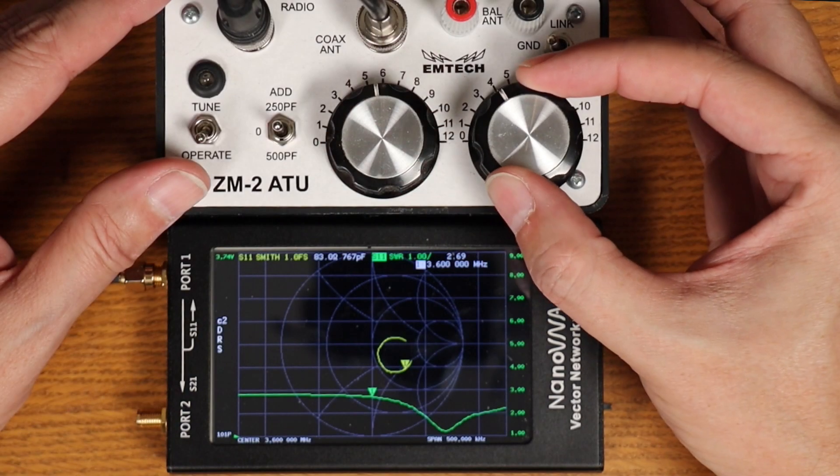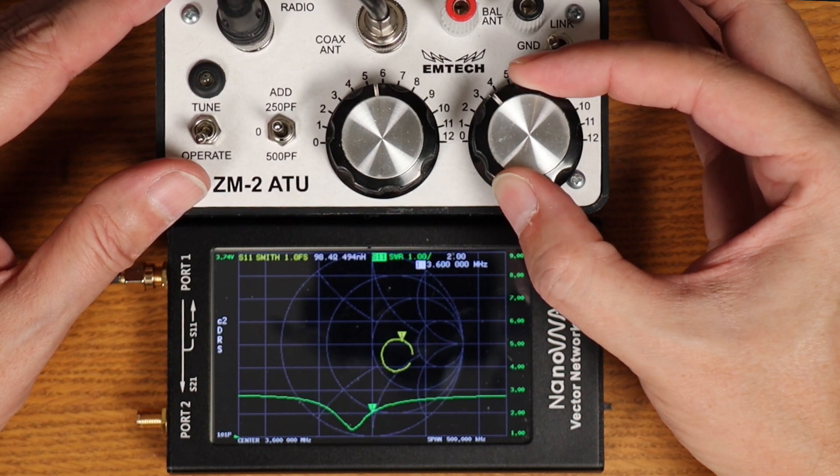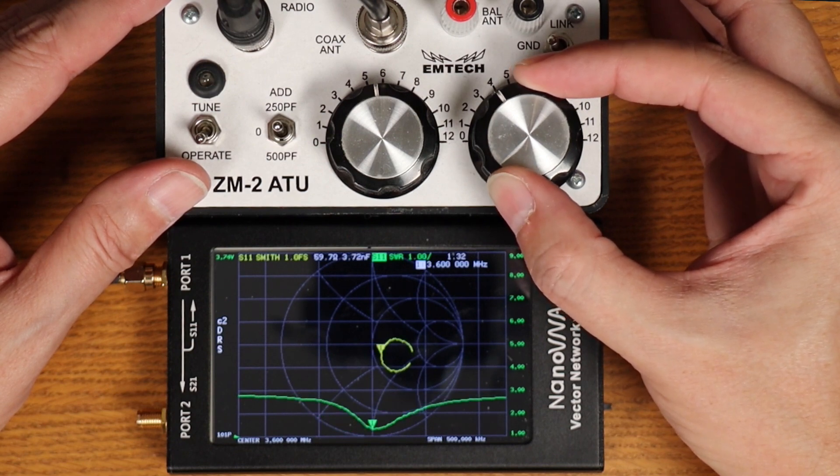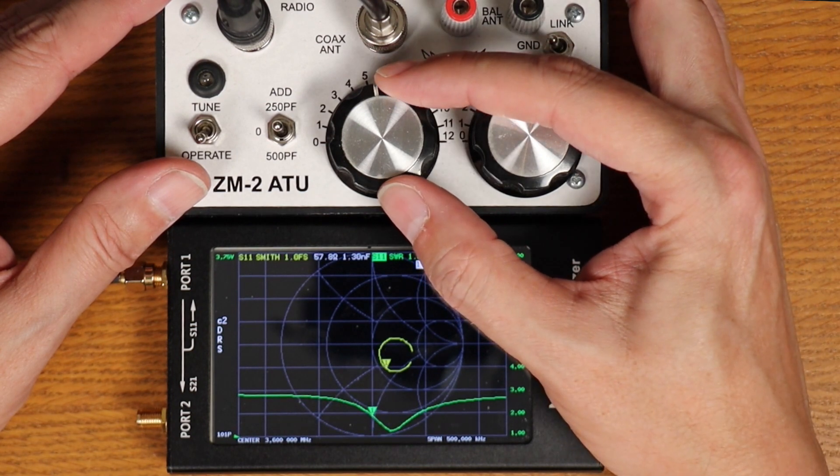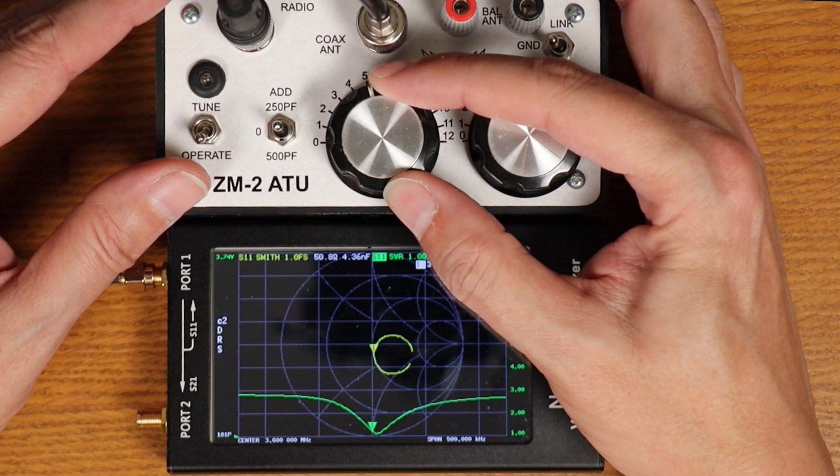You can also use the Smith chart on your antenna analyzer, or nanoVNA, to help you set your manual tuner. Knowing if you need to add or remove inductance or capacitance can be really helpful, and being able to visually see what is happening as you're dialing those knobs around can be enlightening.